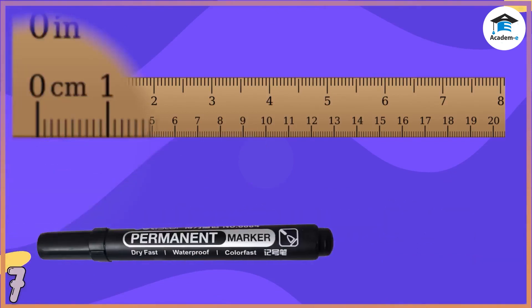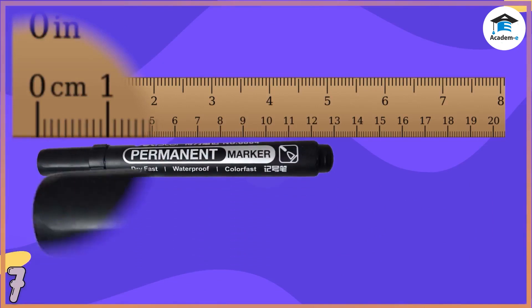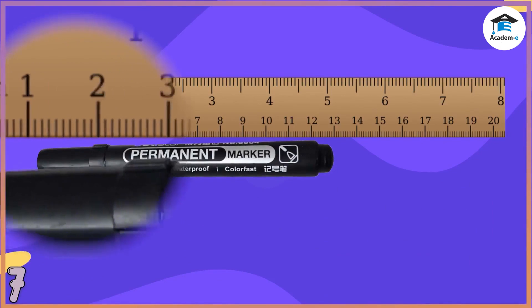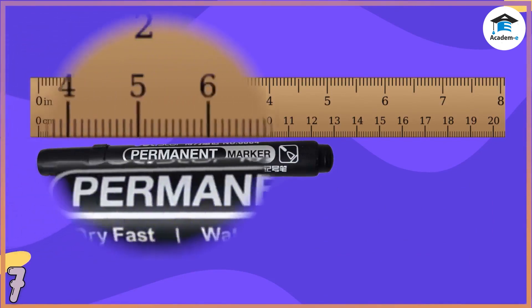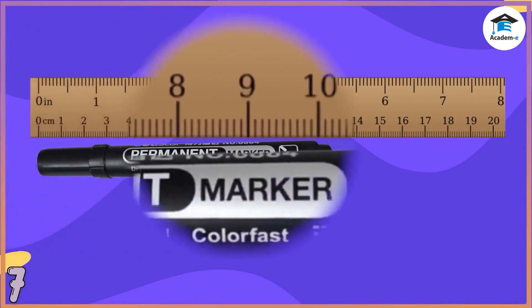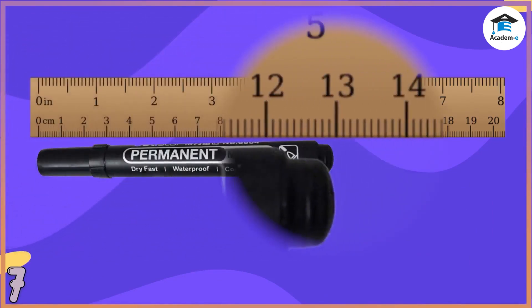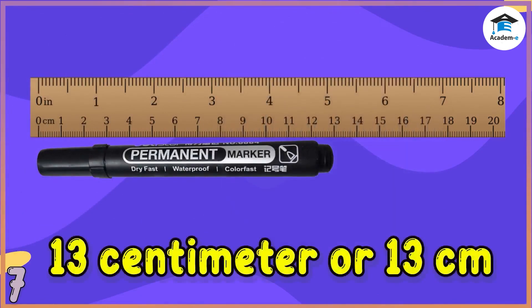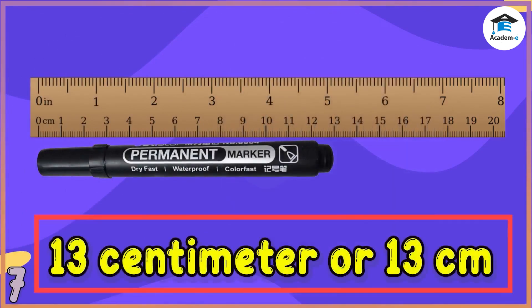Second example: Let us measure this marker. Put the marker beside the ruler and place the tip of the marker at the zero mark of the ruler. Then look at the other end or tip of the marker — it ends at 13 cm. Therefore, the length of the marker is 13 cm.